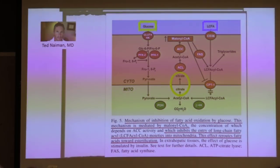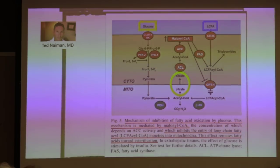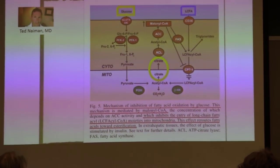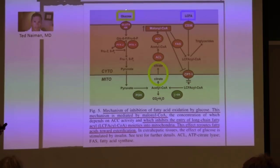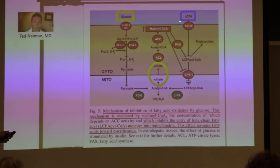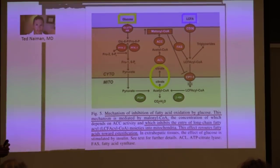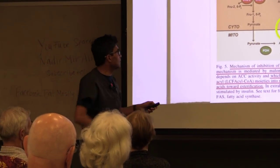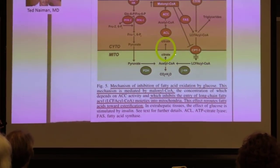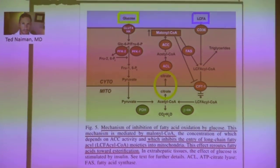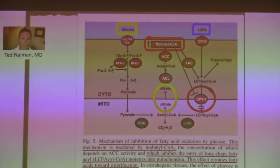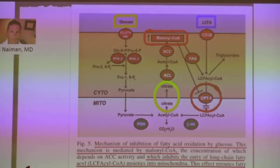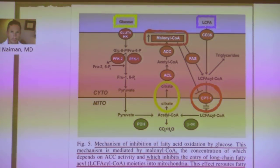You can either burn sugar or fat. If you burn too much sugar, you stop burning fat — because the cell says it has too much sugar and converts it to an intermediate called citrate, which then gets converted to fat. That fat then tells the mitochondria — the engine of the cell — don't take any more carbs, don't take any more fat, because it's overstuffed and overfilled.